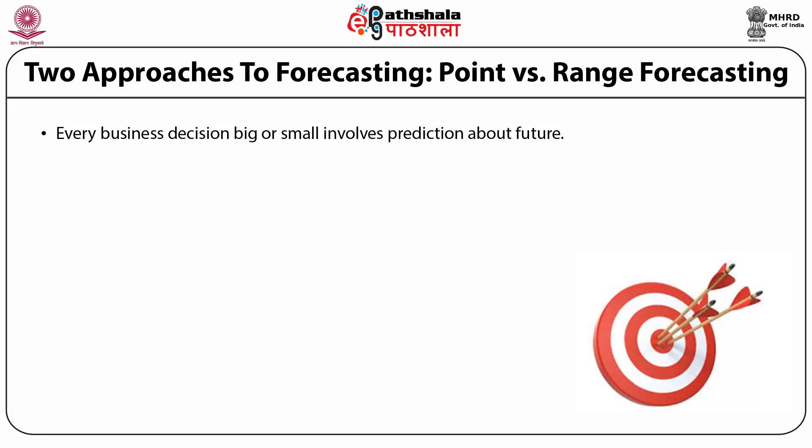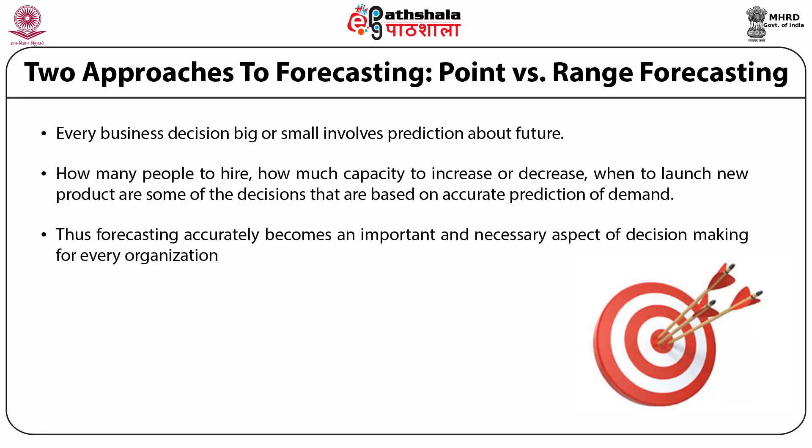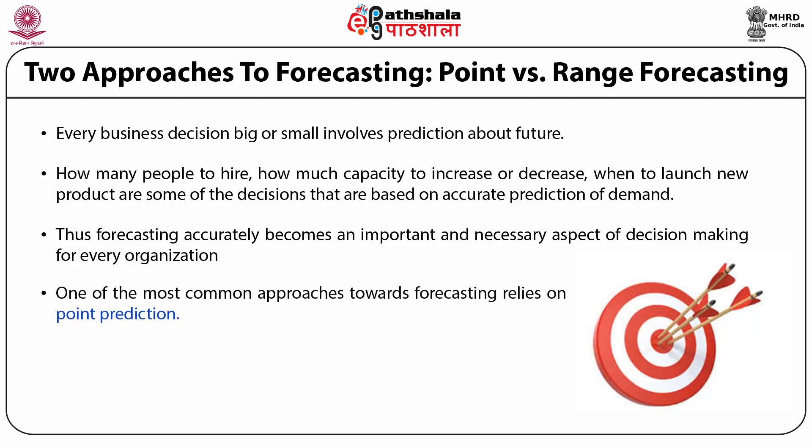Two approaches to forecasting: point versus range forecasting. Every business decision, big or small, involves prediction about the future. How many people to hire? How much capacity to increase or decrease? When to launch a new product? These are some of the decisions that are based on accurate prediction of demand. Thus, forecasting accurately becomes an important and necessary aspect of decision-making for every organization. One of the most common approaches towards forecasting relies on point prediction.